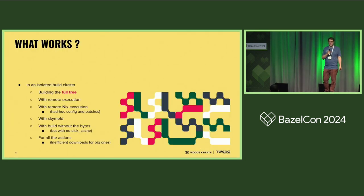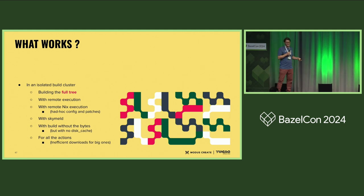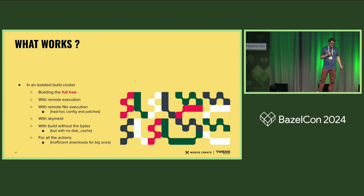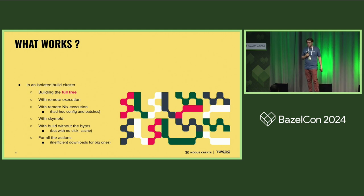What works in this setup? For the first time, I am able to build something that's a real work tree — the whole Intuitive work tree. I am able to run the benchmark job, and I am also able to run a full build. For me, this is a validation of the solution. It's possible to use it. It's not efficient yet, but we have remote execution, we have Nix execution — not perfect but working — we have SkyMeld, and we can build without the bytes. That's quite an achievement.